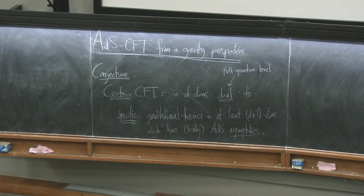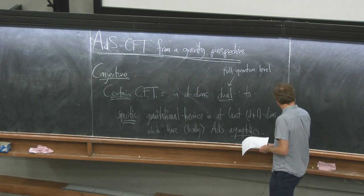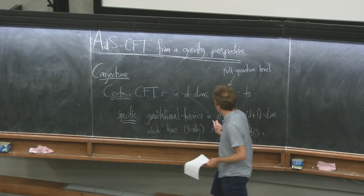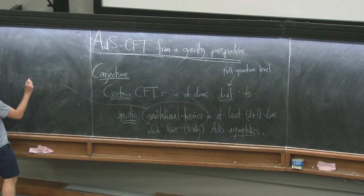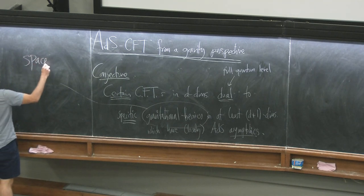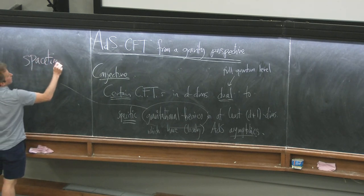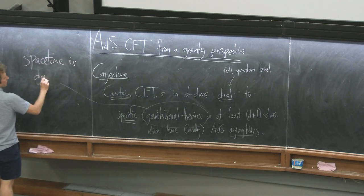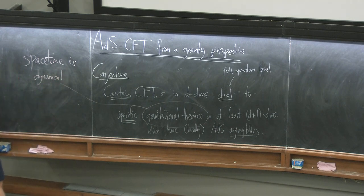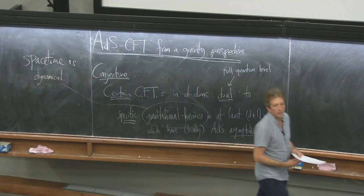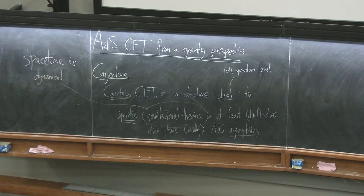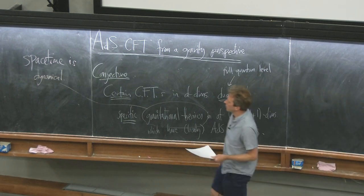By a gravitational theory, I mean spacetime is dynamical. And there's more to gravitational theories than Einstein gravity. Just having dynamical spacetime is a rather general phenomenon, and there are many instances of it that look like nothing whatsoever like Einstein gravity.